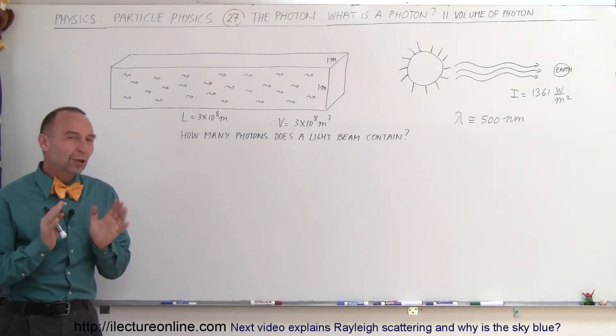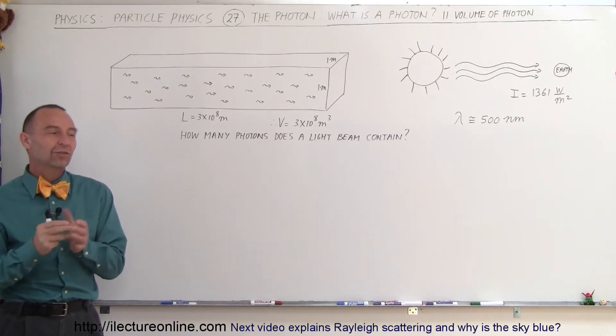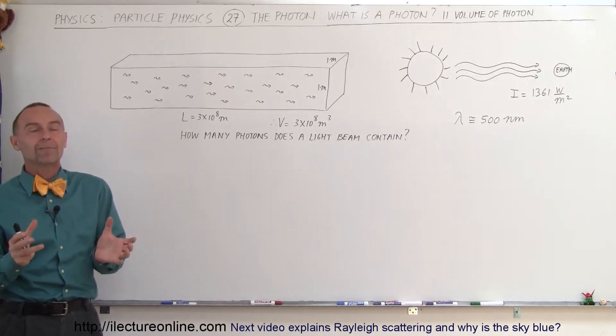Welcome to ElectronLine. Another way in which we can try to figure out what a photon looks like, what a photon actually is, is trying to figure out the volume of a photon.